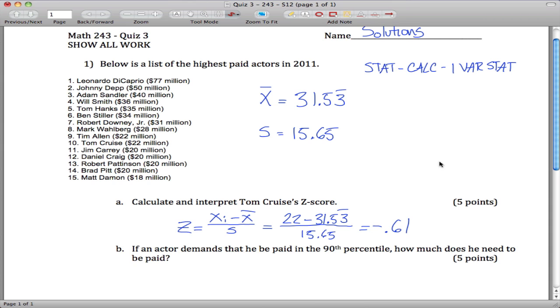To interpret this one, what this is saying is Tom Cruise made less than one standard deviation, 0.61 standard deviations below, because it's negative, the mean of this list of top 15 actors.